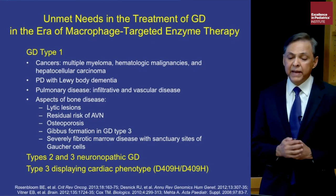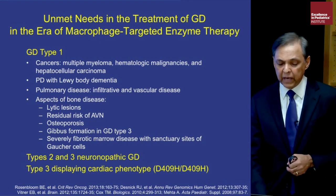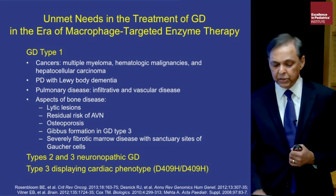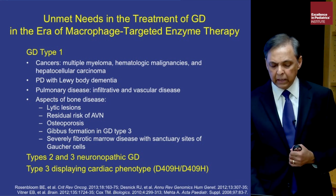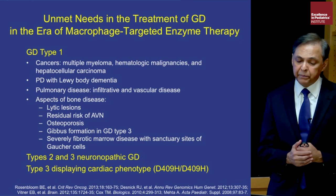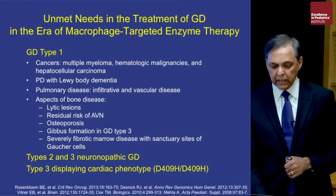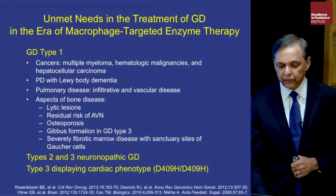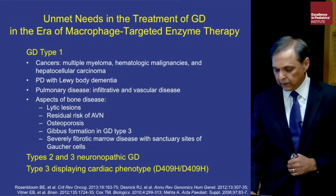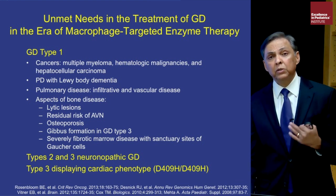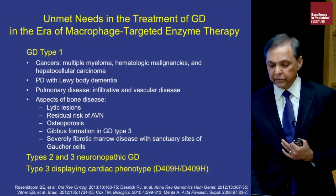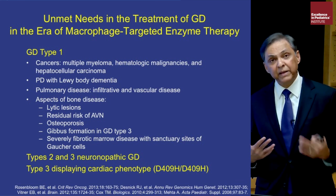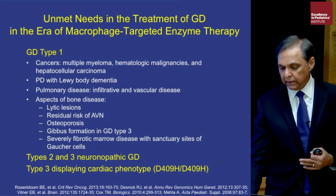Unmet needs in Gaucher disease treatment include the biggest concern for the pediatric population: we have no therapies for type 2 and type 3 Gaucher disease, including the cardiac phenotype type 3c and severe destructive skeletal manifestations. The hope is that future therapies will allow us to look after children affected by these devastating forms of Gaucher disease.